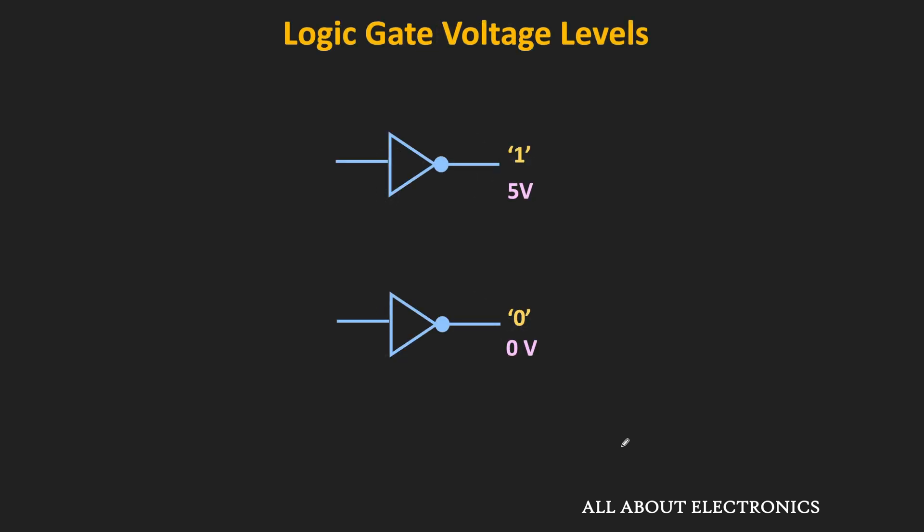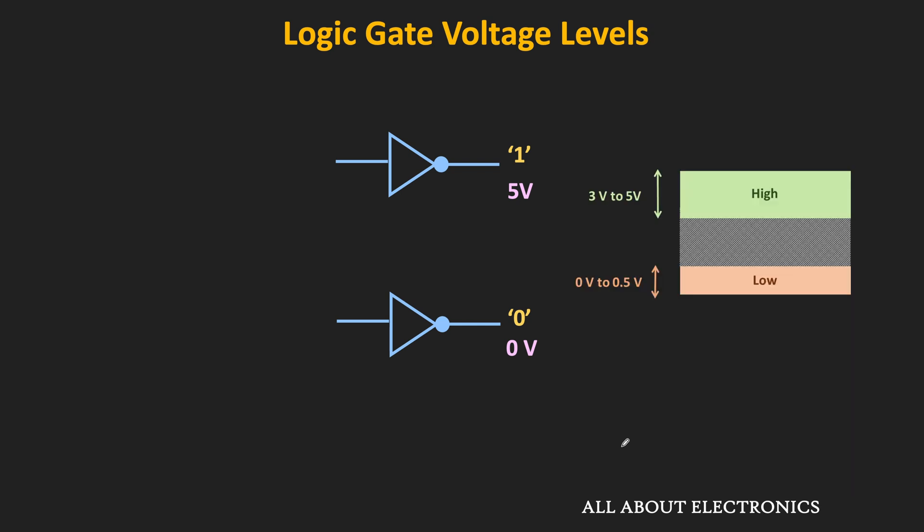Similarly, for the output also, we have assumed that when the output of the logic gate is equal to logic 1, then it will provide 5V. And when the output is equal to logic 0, then it will provide 0V. But actually, because of the voltage drop across the internal circuit of the logic gate, the output voltage will always be less than the supply voltage. And similarly, logic 0 will also be more than 0V. So instead of a single voltage level, logic 1 and logic 0 are defined over a voltage range.